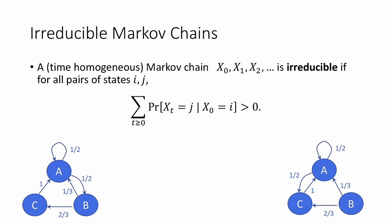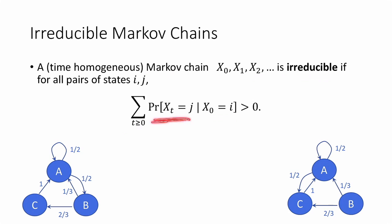Let's start with the definition of an irreducible Markov chain. We say that a time-homogeneous Markov chain x0, x1, x2, and so on, is irreducible if for all pairs of states i and j, the sum over all t greater than or equal to 0 of the probability that x sub t equals j, conditioned on x sub 0 equals i, is strictly greater than 0. In other words, the chain is irreducible if for any states i and j, the probability of eventually getting to j if you start at state i is greater than 0.